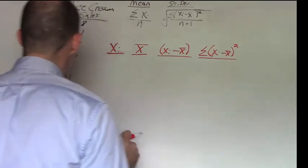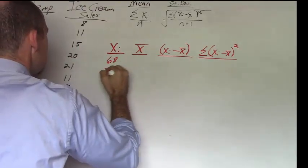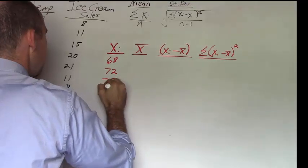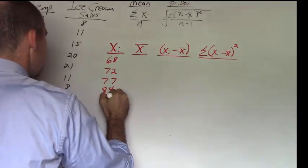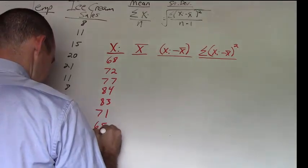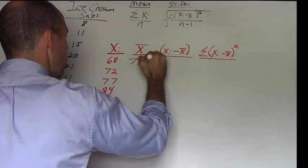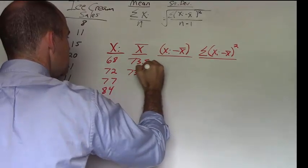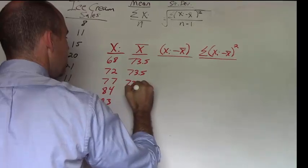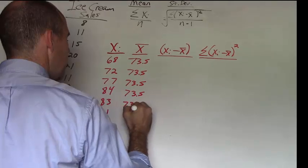So let's go ahead and do this for temperature. We've got 68, 72, 77, 84, 83, 71, 65, and 70. And as I mentioned before, my mean is 73.5. So I'm going to write this all the way down.